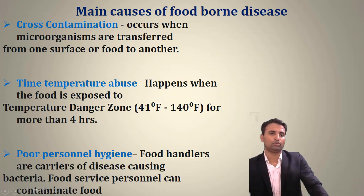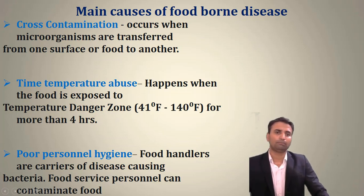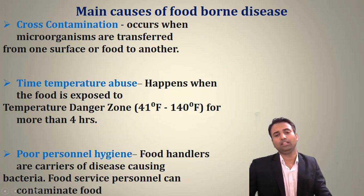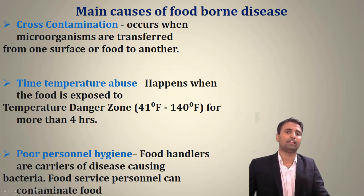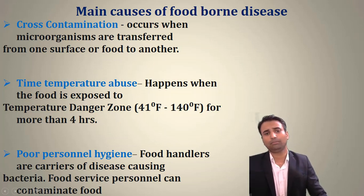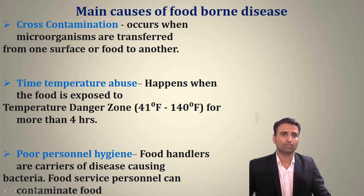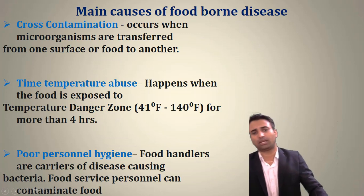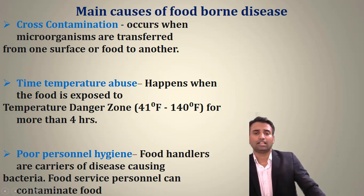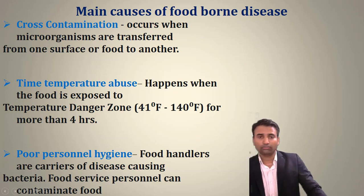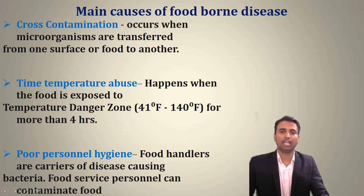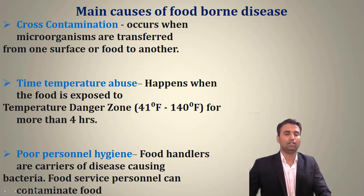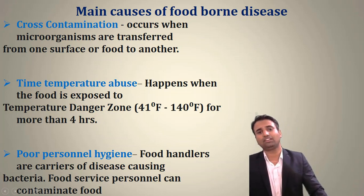Second is time-temperature abuse. If bacteria are given a particular temperature range for some time, the chances of bacterial growth are higher, as time and temperature can also be a lethal dose for microorganisms. There are three kinds of bacteria: psychrophilic bacteria (surviving below 10°C), mesophilic bacteria (surviving between 15°C to 25°C), and thermophilic bacteria (surviving up to 45°C).